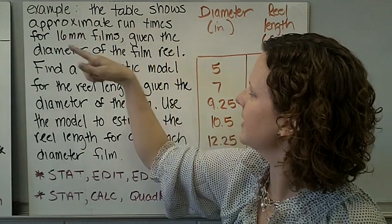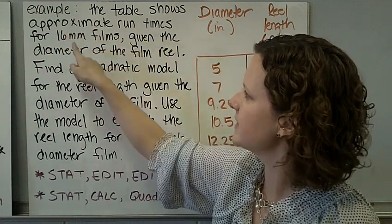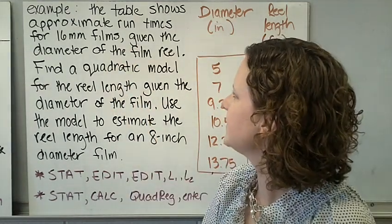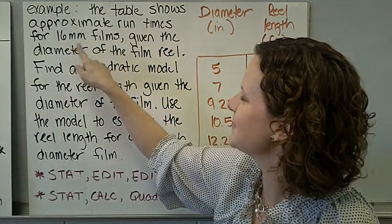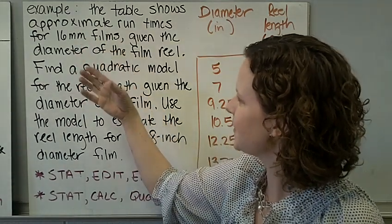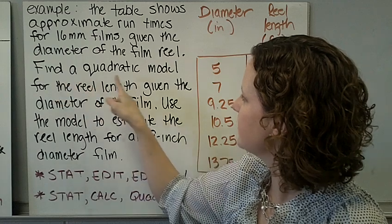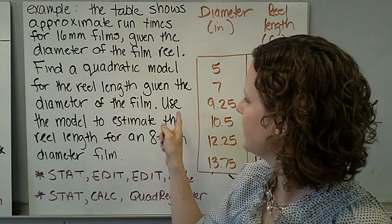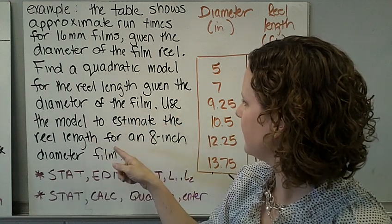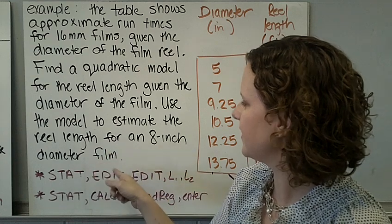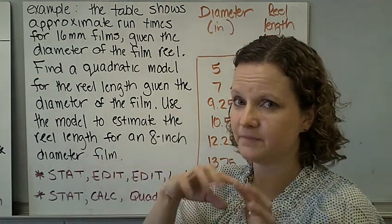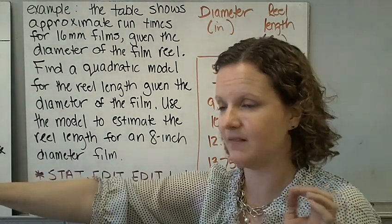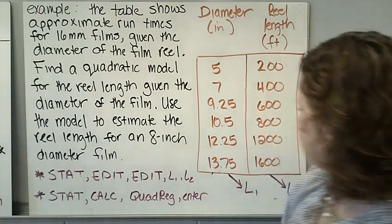Let's try one more. For this example, the table that's behind me shows approximate run times for 16mm films - that was before films went digital - given the diameter of the film reel. The table shows approximated run times for 16mm films given the diameter of the film reel. Find a quadratic model for the reel length given the diameter of the film. Use the model to estimate the reel length for an 8 inch diameter film. So we have film that gives its diameter, and the reel length if we pulled everything out, how long it would be.